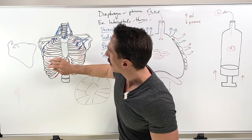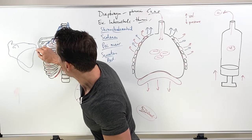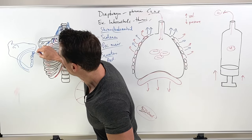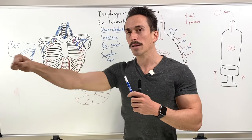What happens is the serratus anterior comes around and it inserts at this medial border. So it inserts all along here.